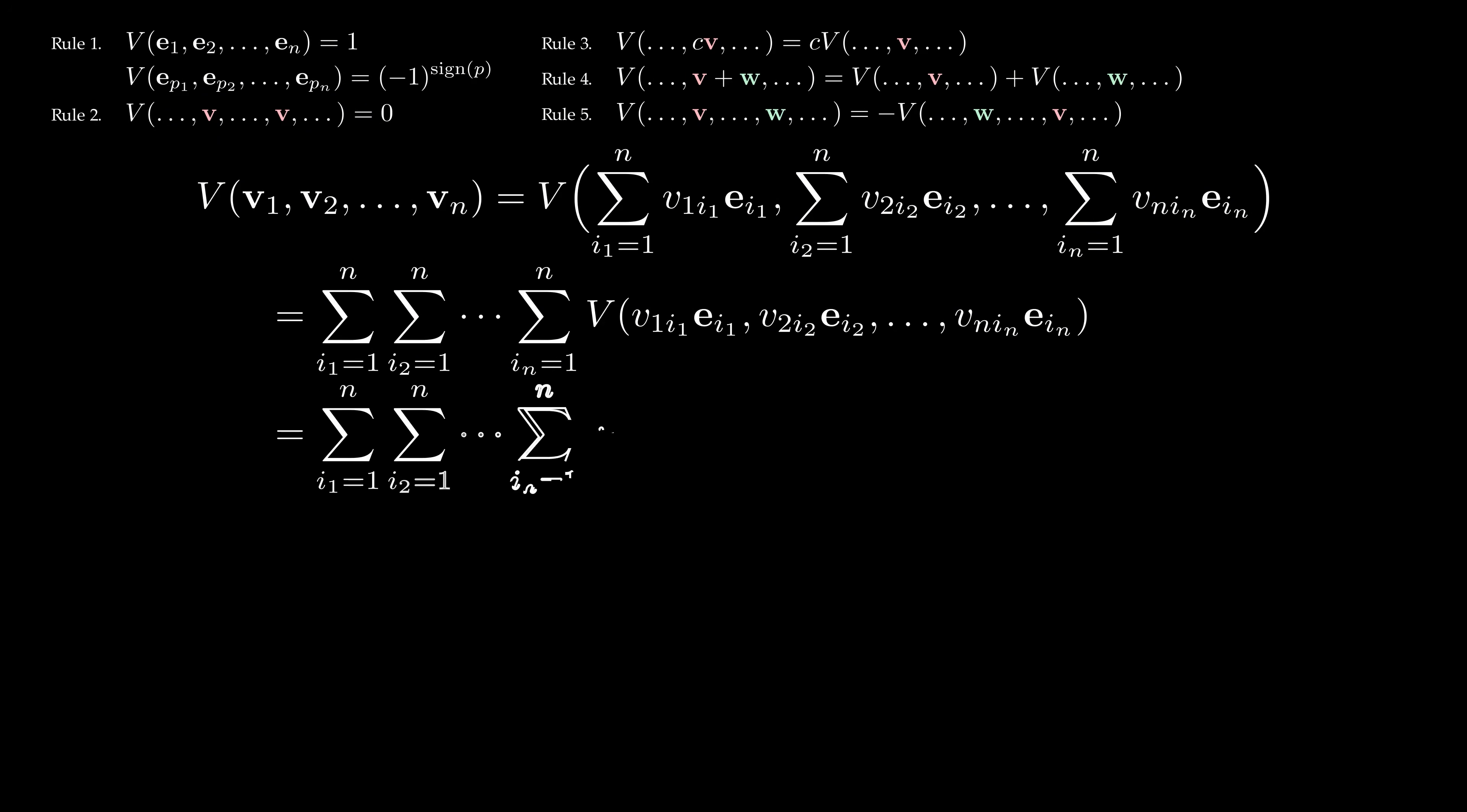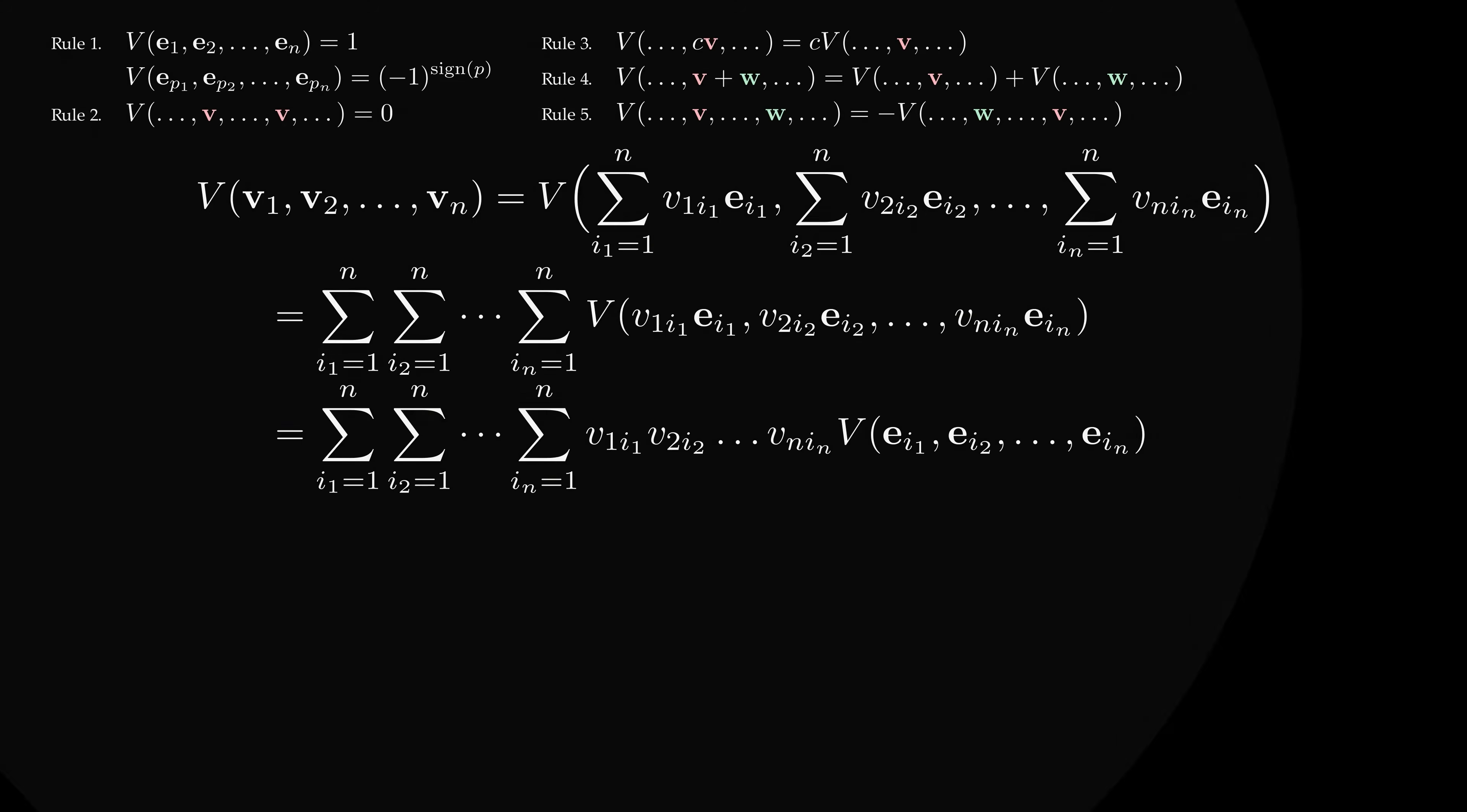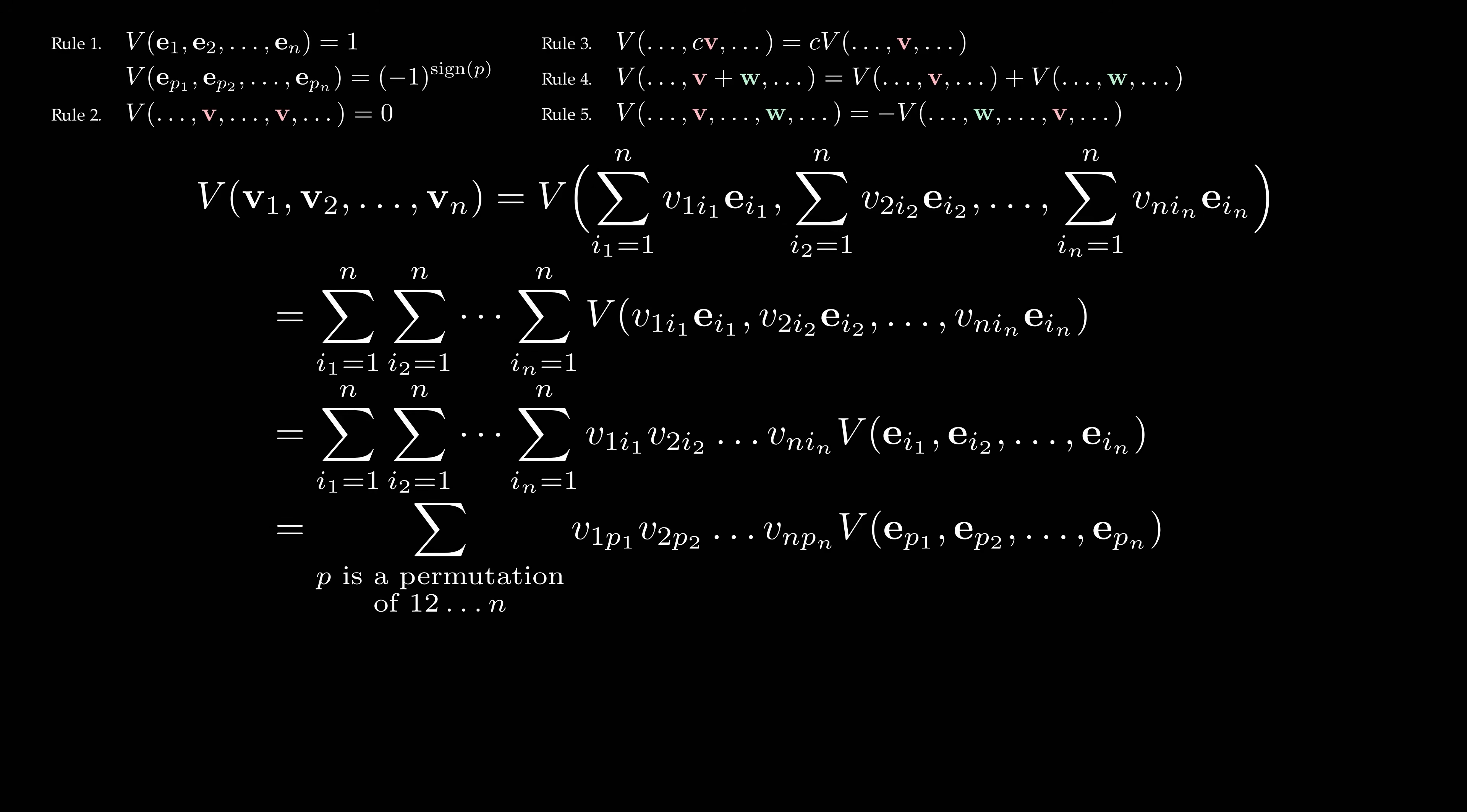We then apply rule 3 to pull all of the constants out. And just like before, most terms in this big sum contain at least one repeated vector. So they vanish, leaving only the terms that have no repeated vectors. That is, terms involving permutations of the basis vectors e1 through en.